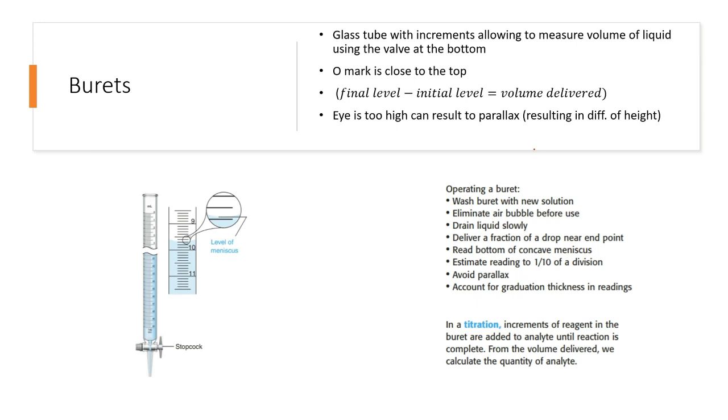In a titration, increments of reagent in the burette are added to analyte. Analyte is the liquid in that burette in this case. Until reaction is completed. From the volume being delivered, we can calculate the quantity of the analyte.